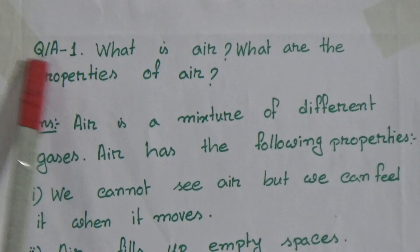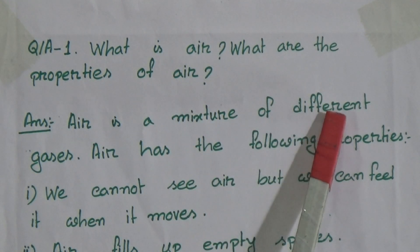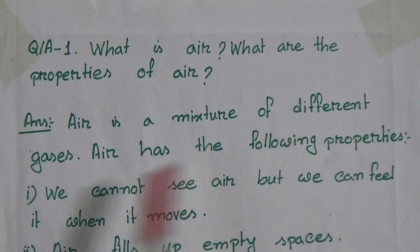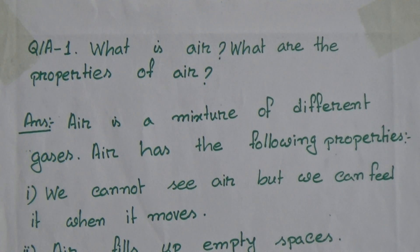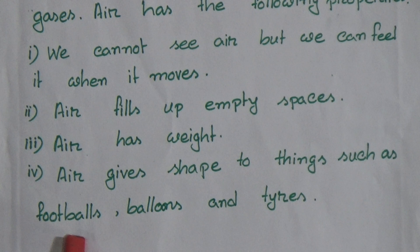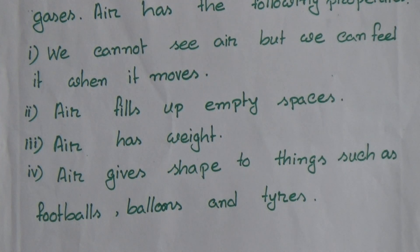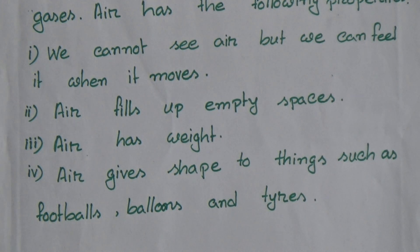Question answer. Number 1: what is air? What are the properties of air? Answer: air is a mixture of different gases. Air has the following properties: number 1 — we cannot see air but we can feel it when it moves; number 2 — air fills up empty spaces; number 3 — air has weight; number 4 — air gives shape to things such as footballs, balloons, and tires.